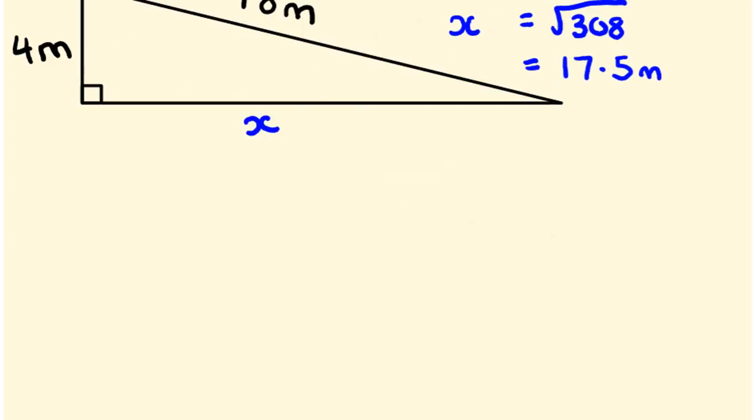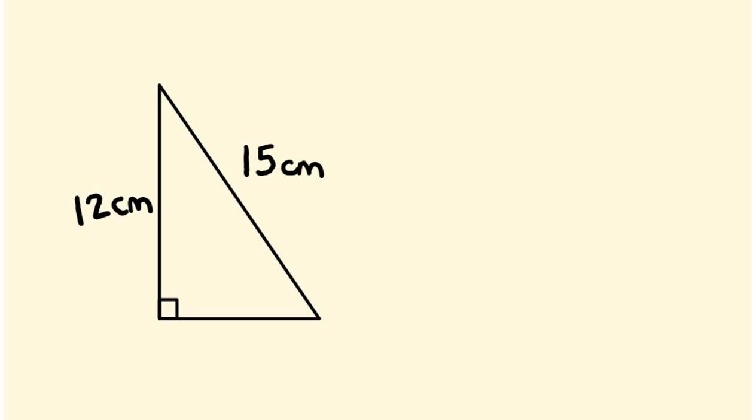Let's have a look at one more example. Say we have this particular one here. Again, let's label this unknown side, and again it's one of the shorter sides. So write out the formula: a² + b² = c². Let's substitute in some values here. We're going to call this one X again, so X²...